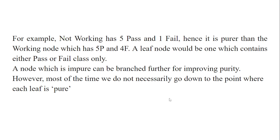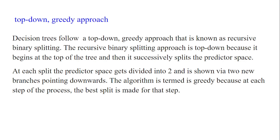Most of the time we don't necessarily go down to a point where each leaf is pure, because if you go on splitting it will lead to the overfitting problem. The decision tree follows a top-down greedy approach known as recursive binary splitting. It begins at the top of the tree and successively splits the predictor space.